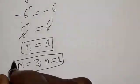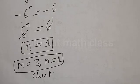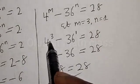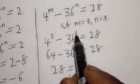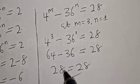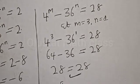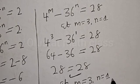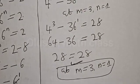Therefore our answers are m equals 3 and n equals 1 — those are the positive integer solutions. Let's check: 4 raised to power 3 is 64, minus 36 raised to power 1 is 36, which equals 28. So 64 minus 36 equals 28, which satisfies the given equation at m = 3 and n = 1. If you enjoyed the class please don't forget to like, share, comment and subscribe. Thank you.